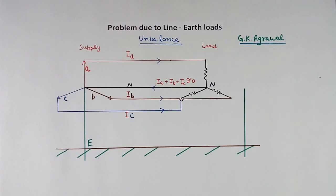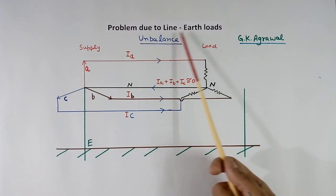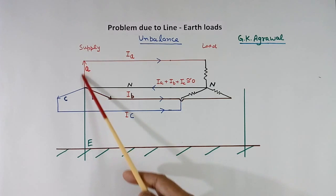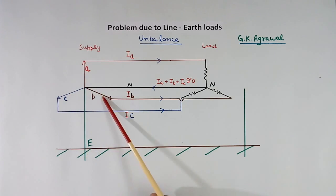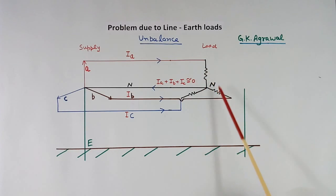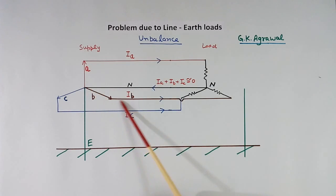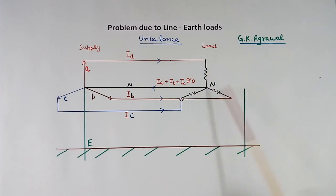Now suppose we connect the load across line and earth instead of neutral — what problem will come? This is the supply side, the transformer's secondary. These are 3 houses divided in 3 parts: one group gets power from A, another from B, third from C. Neutral will be common. Here I have shown them together.